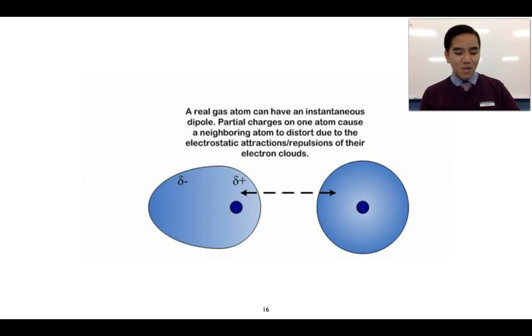But what can happen in a certain situation is that the electrons in one of our neon atoms can, due to the random movement of its electrons, situate itself more on one end compared to the other.